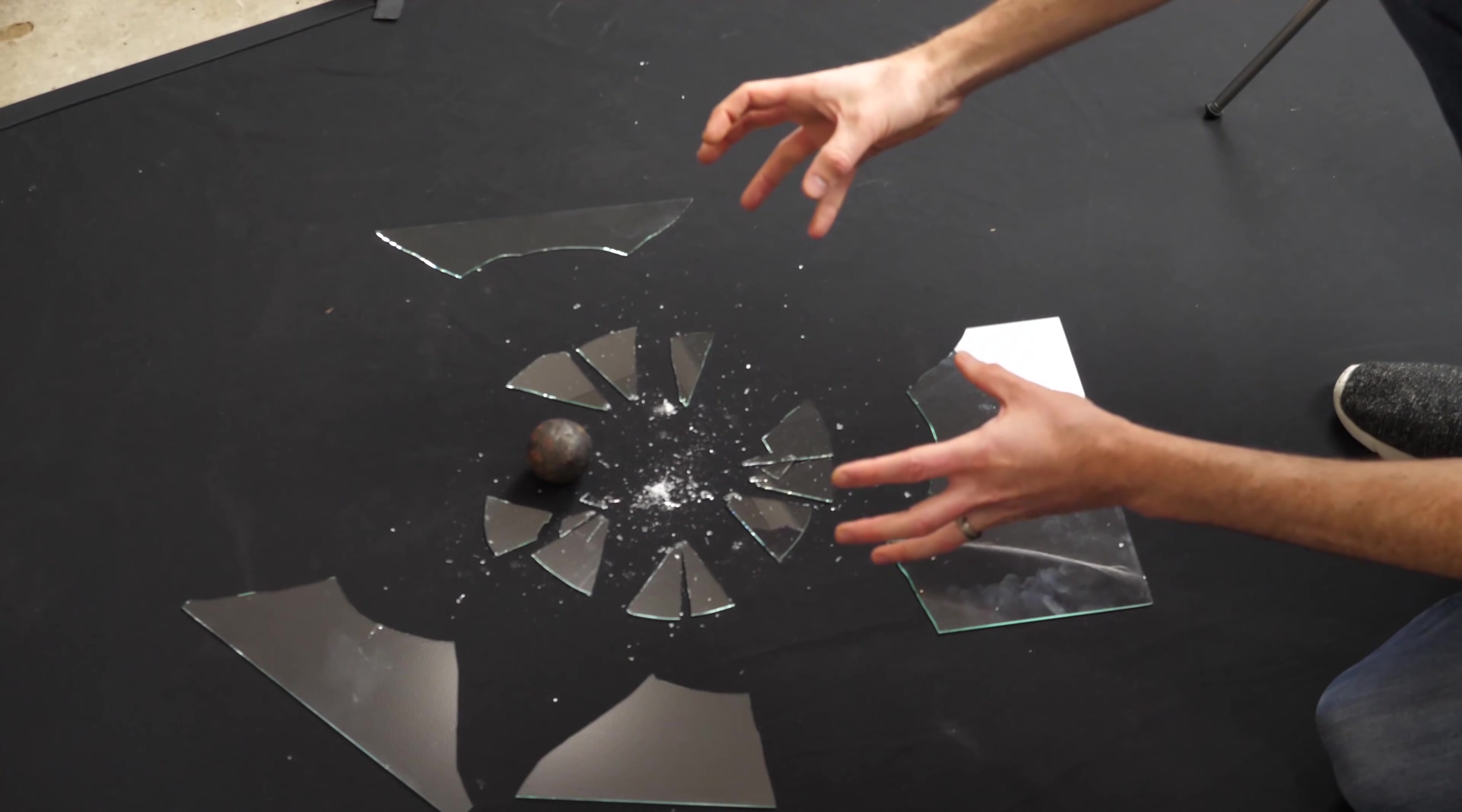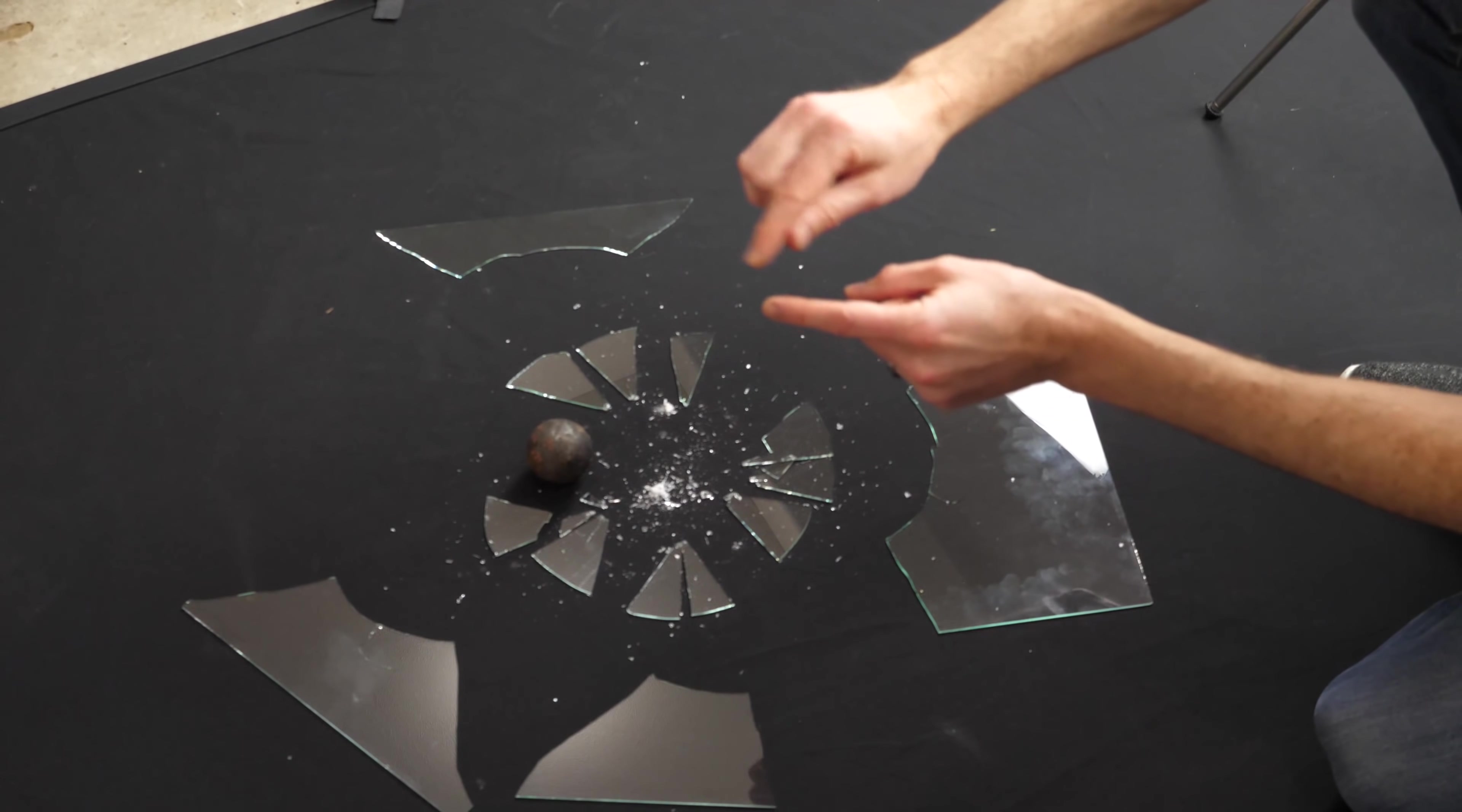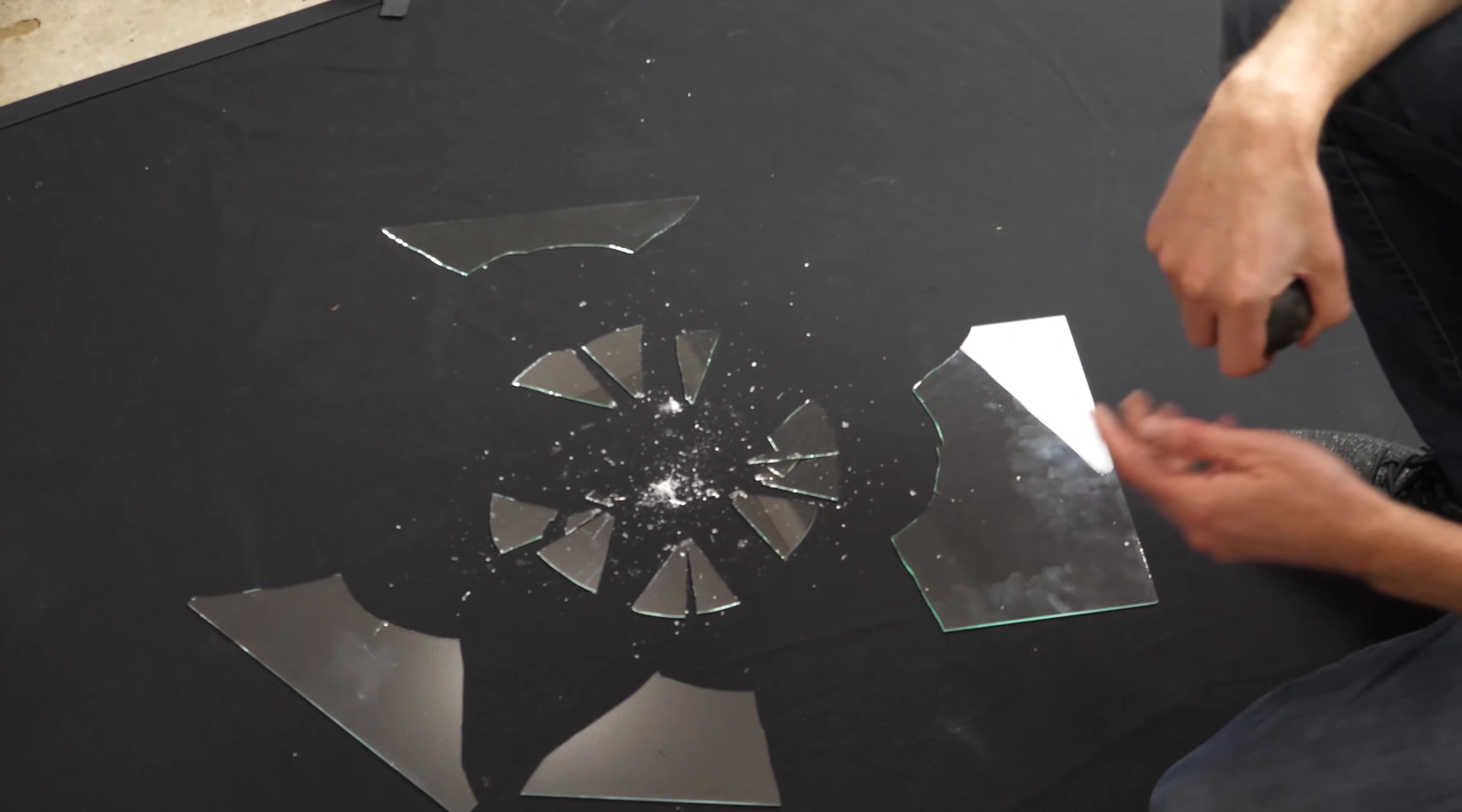And so the stronger the glass, and the more tempered it is, meaning the more compression is on the surface, the smaller little cracks it's going to make. Okay, so a thousand frames per second didn't even come close to catching the cracks propagating through the glass.